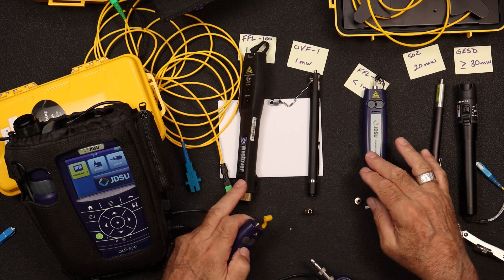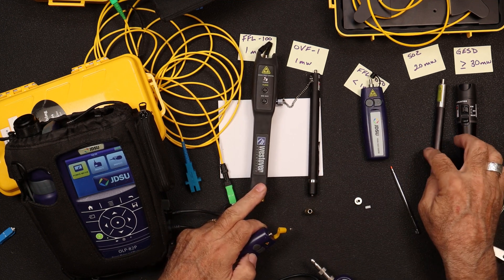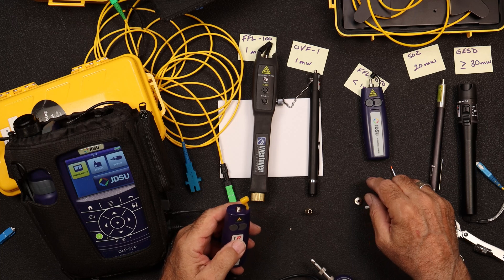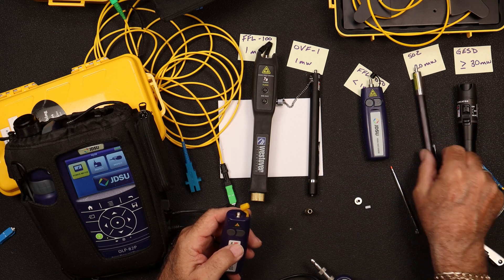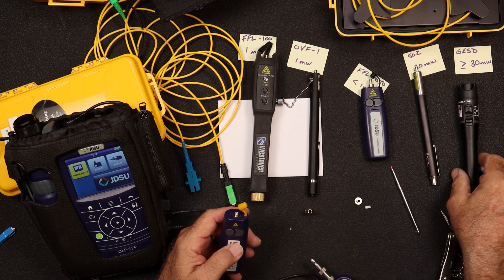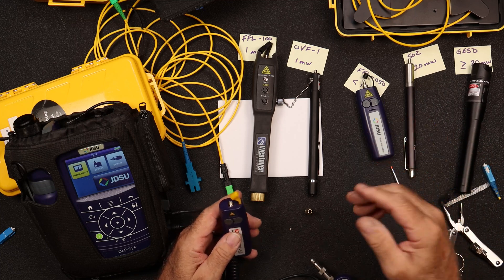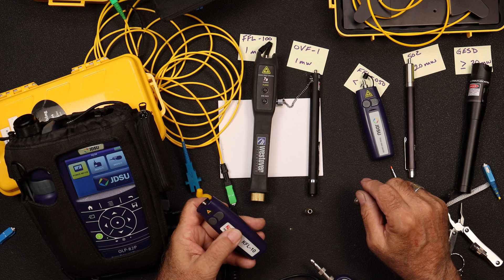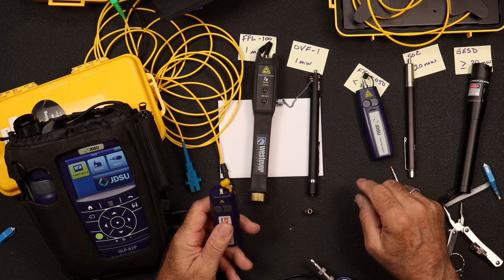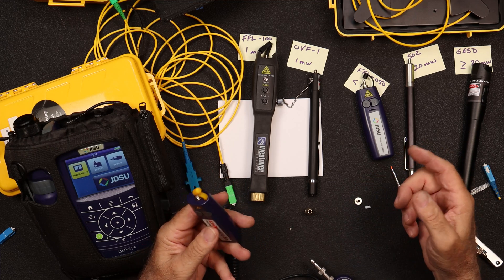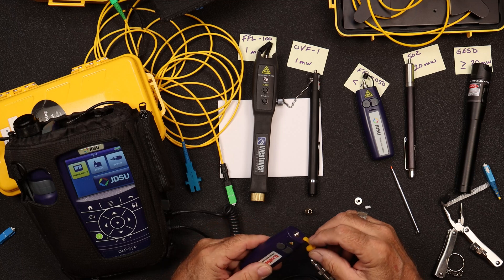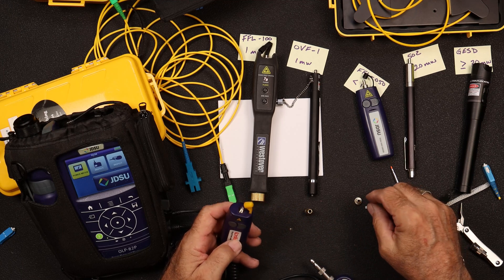We started working on a video on these guys, visual fault locators and the various types, 30 milliwatt, 35 kilometers advertised, 20, and so on and so forth. And as we were going down the road and started on that video, we realized that we've never had the discussion on what is in these guys.